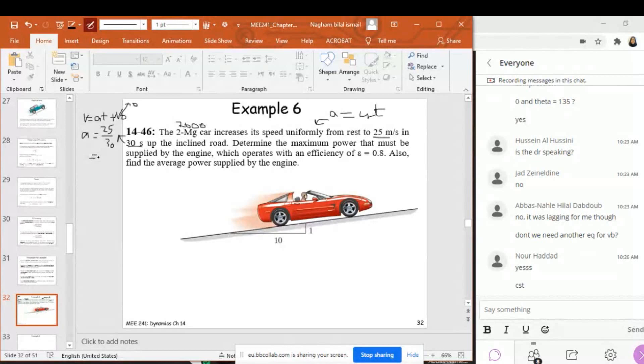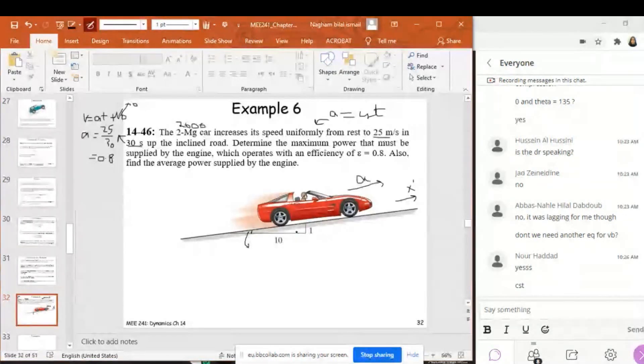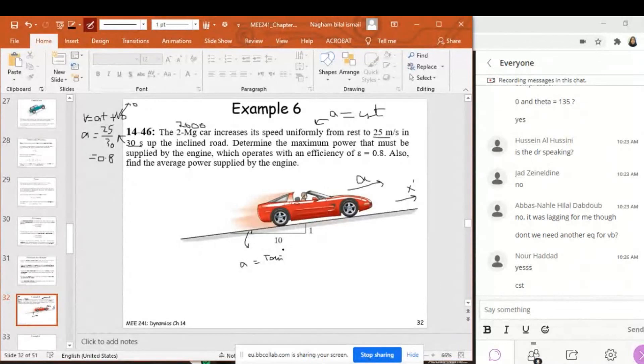I know the acceleration, and what's the direction? It has the direction of the motion, so the direction of acceleration is in x-prime. This is x-prime, and I can predict this angle because I have the slope here. This angle alpha is tan⁻¹(1/10), almost equal to 5.7 degrees.